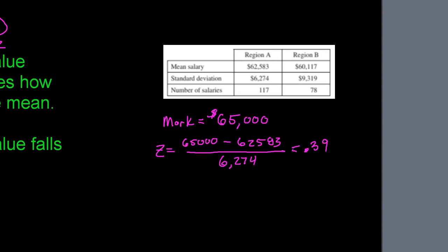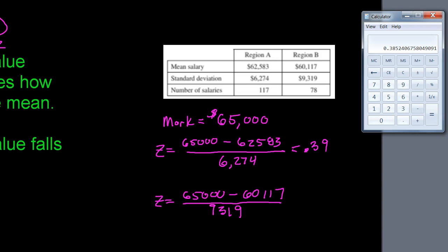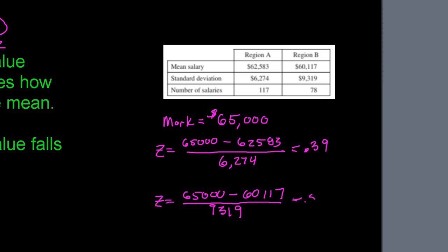In Region B (mean $60,117, SD $9,319), Mark's Z-score is (65,000 − 60,117) / 9,319 ≈ 0.52 — about half a standard deviation above the mean. Even though he earns nearly $5,000 more than the mean, the much larger standard deviation means he's still not standing out. Z-scores are a great way to truly understand your position in the data. Note that Z-scores have no units — they're measured in standard deviations from the mean.